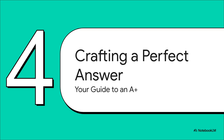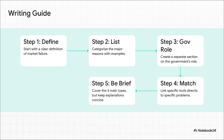Let's switch gears. Knowing all this stuff is great, but the real test is being able to explain it clearly and effectively, especially on an exam. Let's build the perfect A-plus answer step by step. It's actually a pretty simple formula. First, start with a crisp, clear definition of market failure. Second, list and explain the different reasons it happens — those four failures we just talked about. Third, make sure you talk about the government's role.